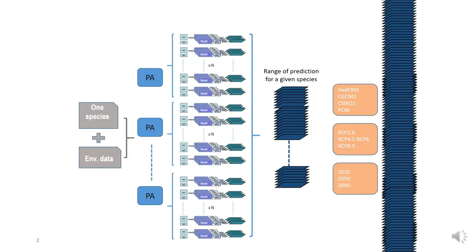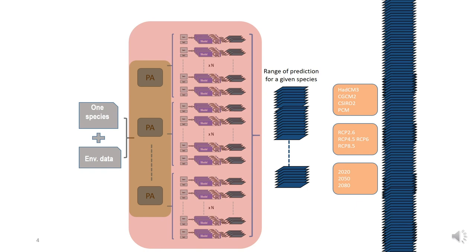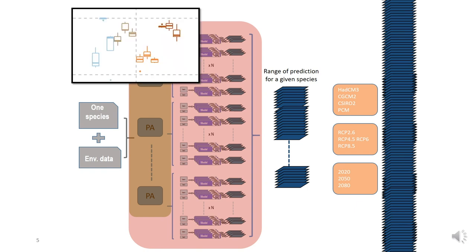Here is a global workflow of biomod presented by Wilfrid to obtain distribution models and projections for one species. I will first go a bit in details about pseudo-absences and how to select them, then I will introduce ensemble modeling, and finally, talk about the variability you can find in your models and how to interpret it.